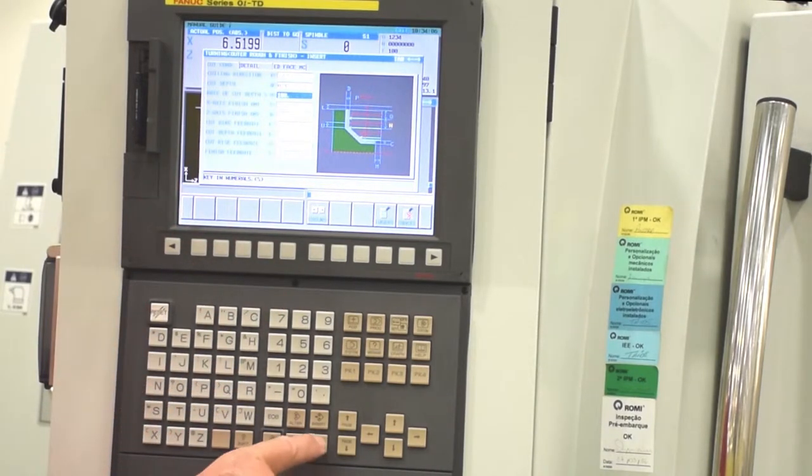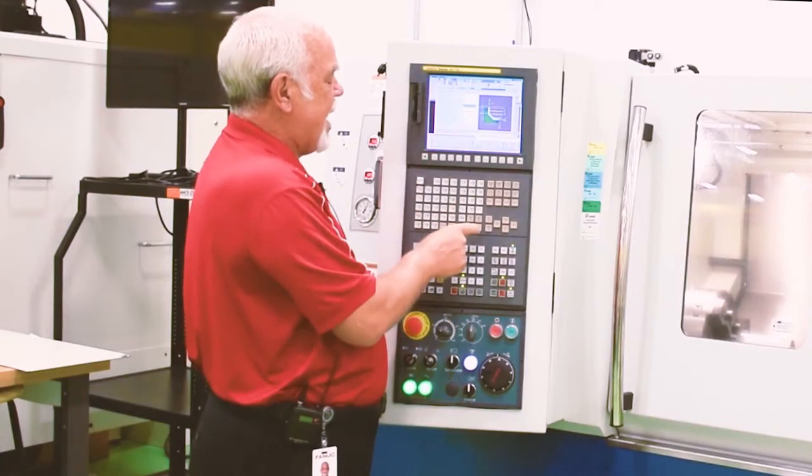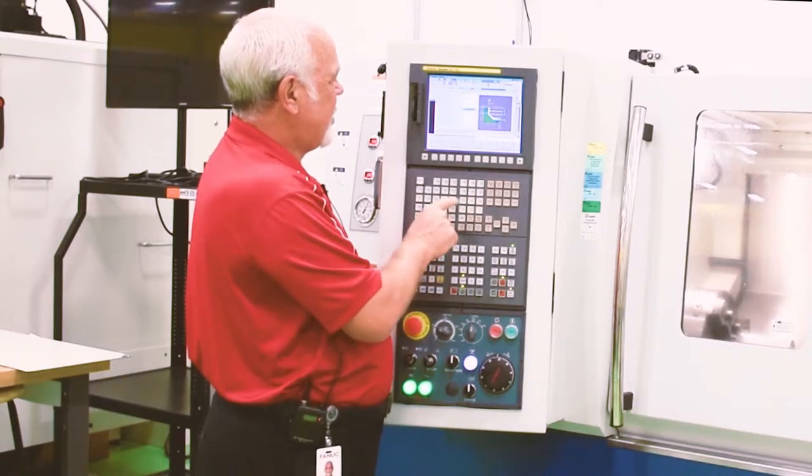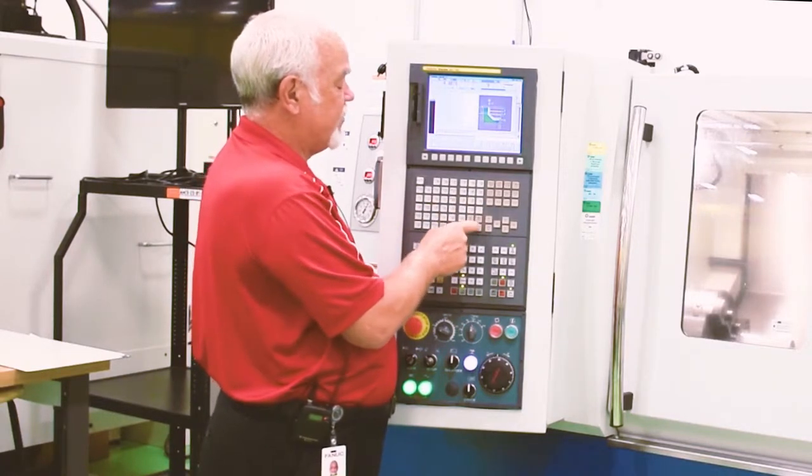100% of rate cut depth. This is the amount of stock. We'll say one millimeter for finish stock, one millimeter for Z stock.